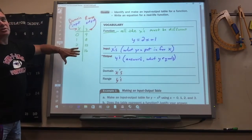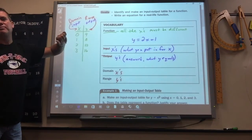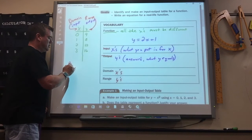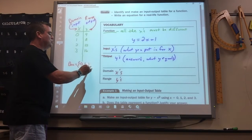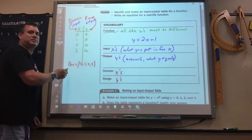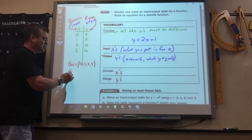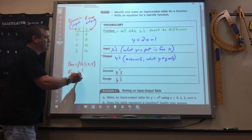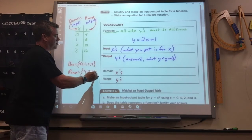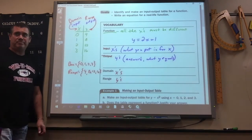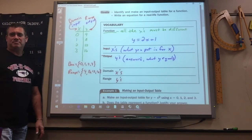So if you had this function table, and they told you to describe the domain, you would just say the domain equals zero, one, two, and three. You just list the x's. If they said describe the range, you'd list the y's. Okay? You guys remember doing this at all?